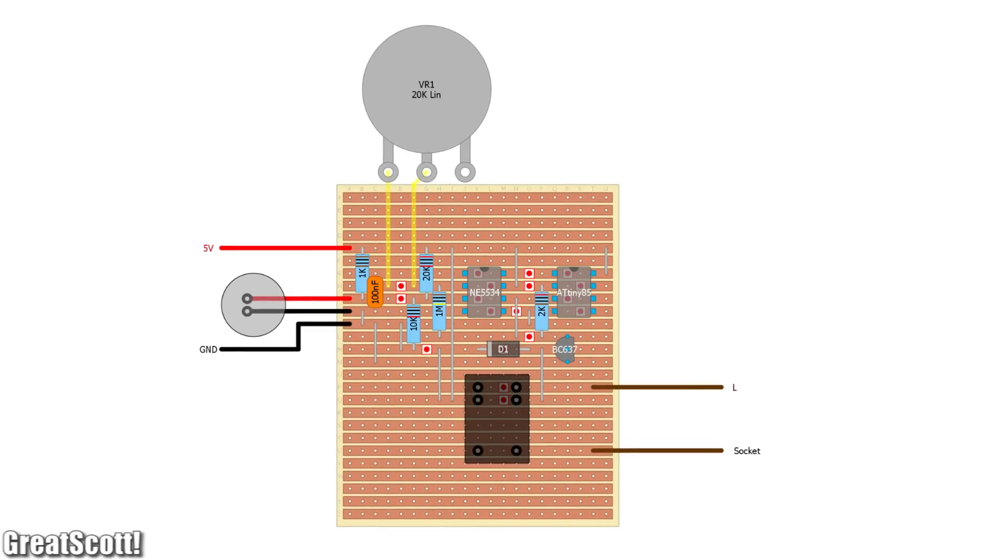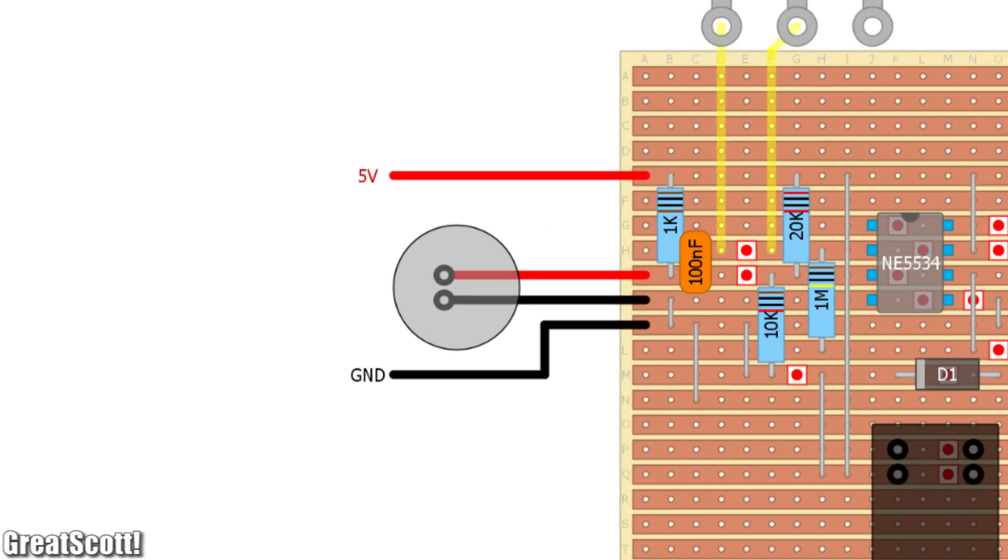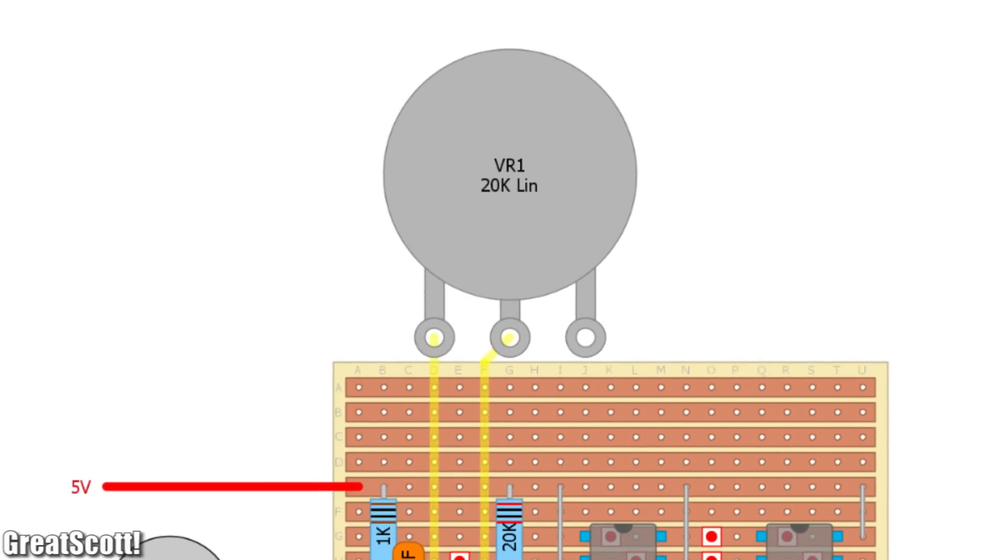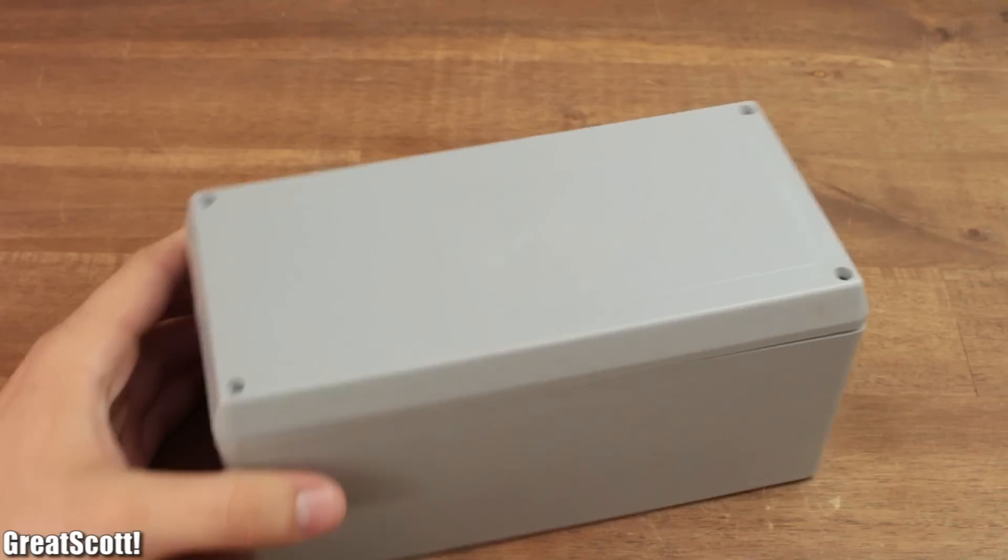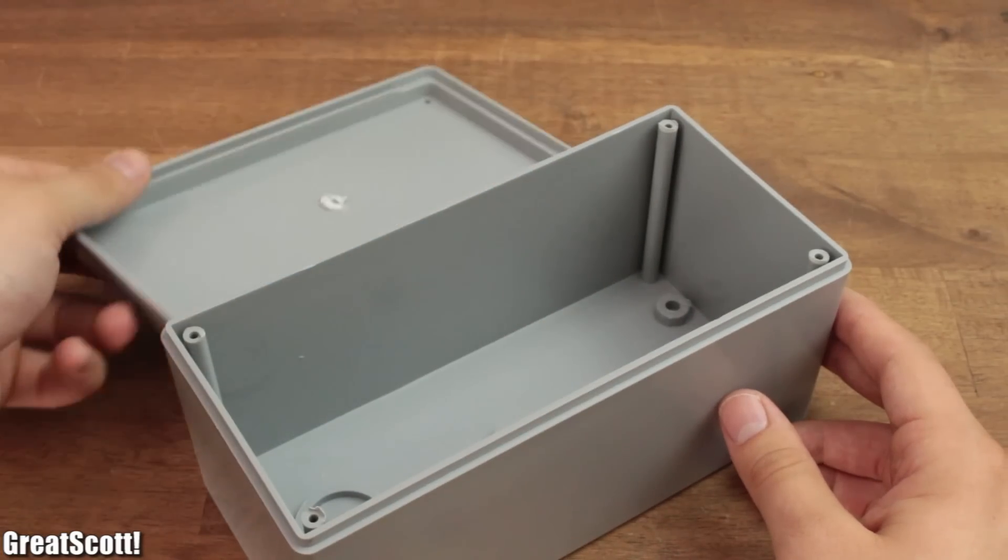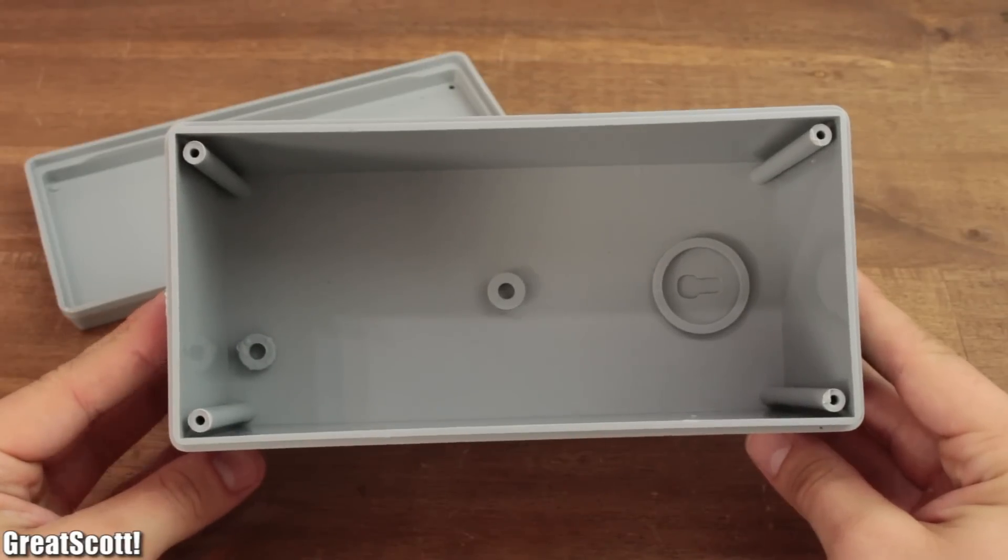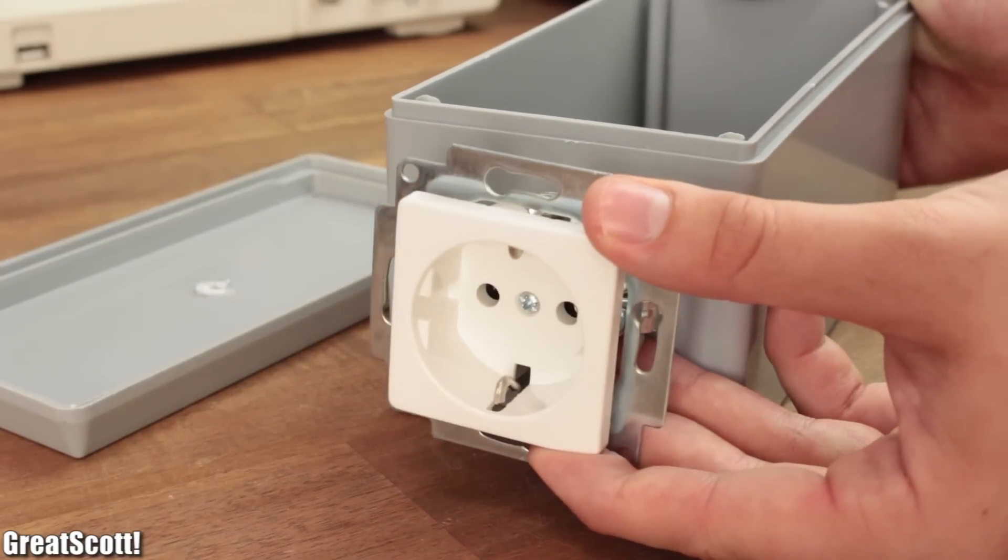The complete schematic for the circuit looks like this. And with the help of it, I also created this Vero board layout, which features the microphone and potentiometer as a breakout, so that I can mount them in the top section of my enclosure. Speaking of the case, I went with this not so great looking grey project box. The only important aspect to look out for is that there should be enough space on the front for the socket.